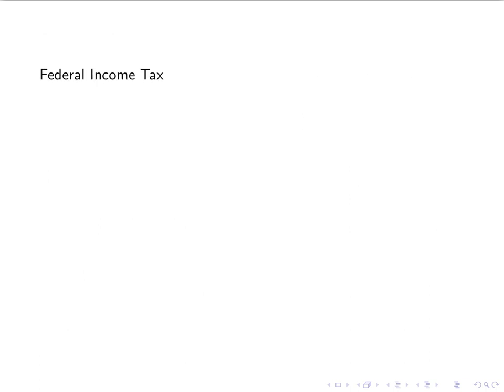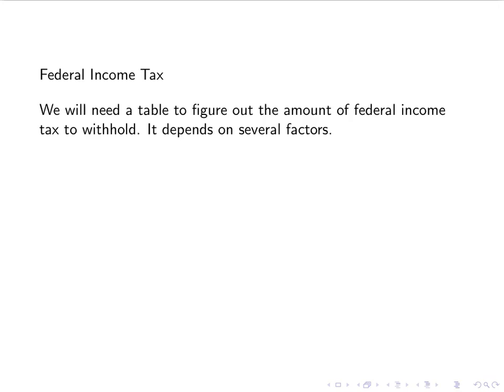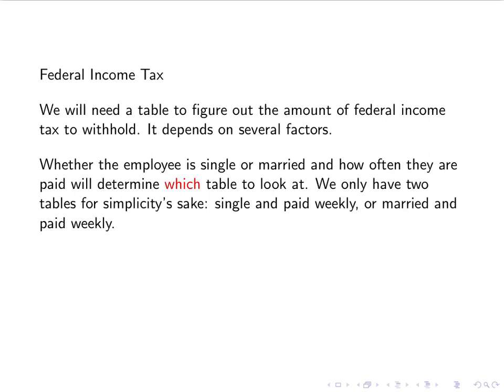The next main withholding is federal tax. We're going to need a table to figure this out — it's not a basic percent problem. It depends on several factors: whether the employee is single or married, and also how often they're paid, whether weekly, bi-weekly, monthly, and so on. We're going to focus on just single and married, paid weekly, so we'll only have two tables to look at.